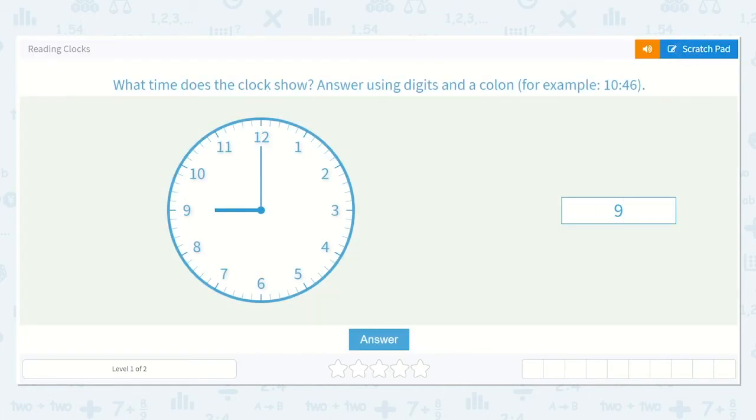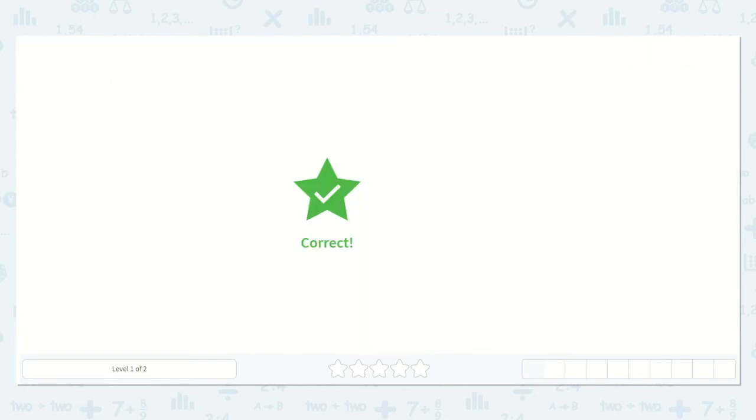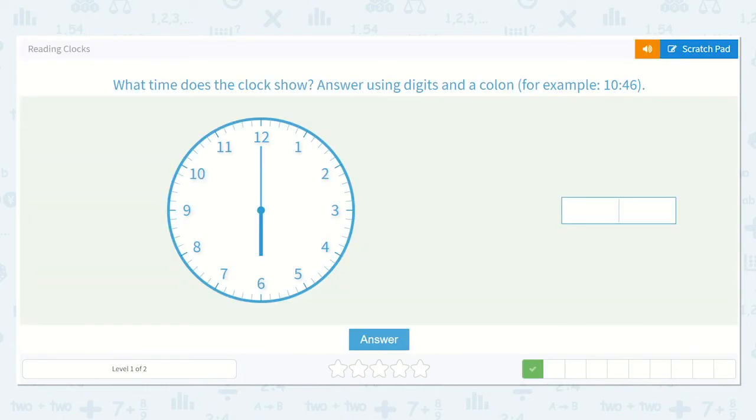Let's type nine, colon zero, zero. Okay, what time does this clock show? So let's look at our hour hand first. It's pointing at the 6. Then our minute hand is pointing at the 12. So I say my hour first, 6.